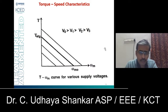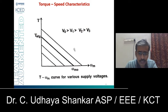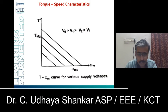The Torque Speed Characteristics have already been plotted in the earlier session. You can see that the Torque Speed Characteristics are all parallel with respect to each other for different voltage levels — V0, V1, V2, and V3 — where V0 is greater than V1 and V1 is greater than V2. As the voltage reduces, the Torque Speed Characteristics shift to a lower speed.